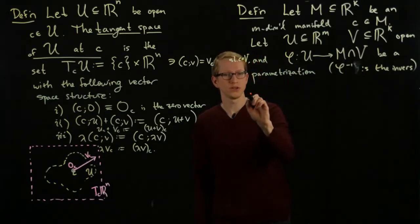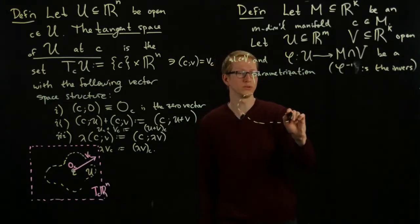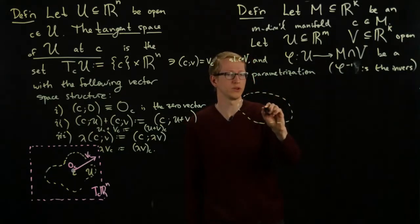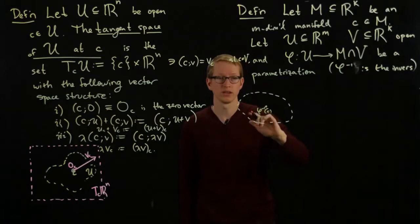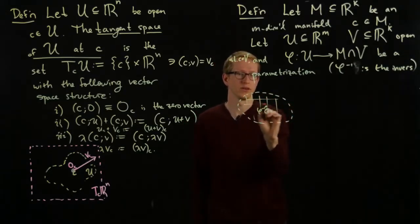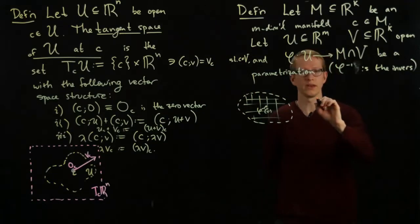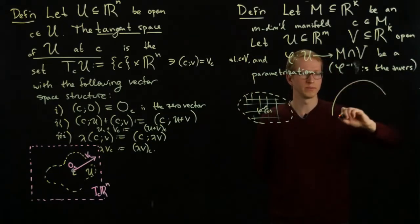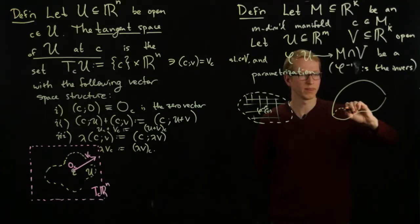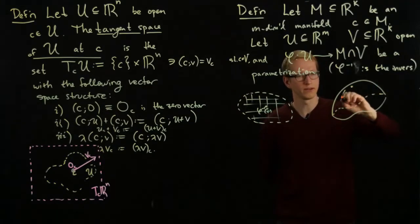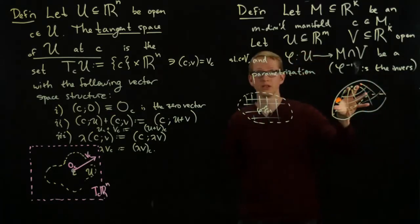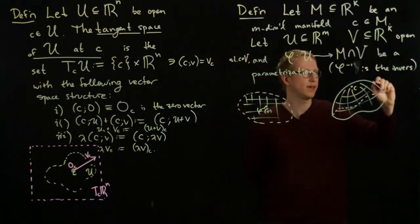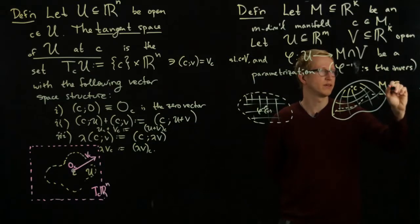Here's our open set U. Let's say it's two-dimensional, so that it's easy for me to draw. And phi inverse of c is some point in this domain. This is an open subset of some Euclidean space, so we have coordinates here. Let's say our manifold maybe looks like a piece of a hemisphere or something like that. Here's our point c. This parameterization gives us something that looks like coordinates on our manifold. And this is M, a part of M, in Rk.